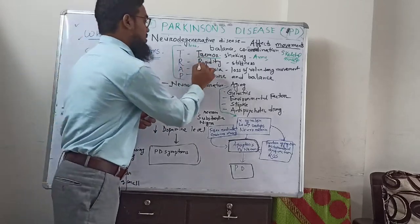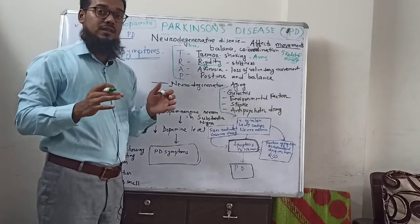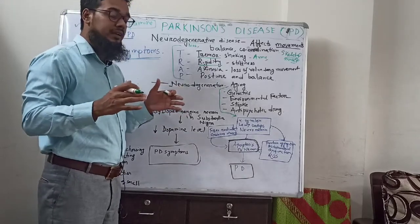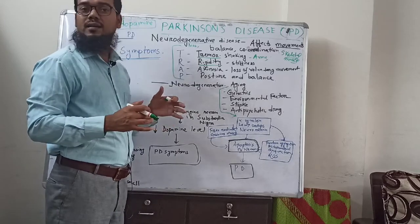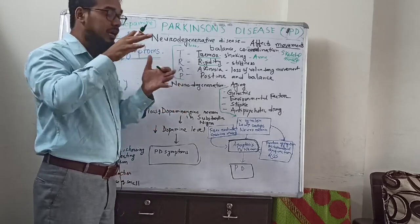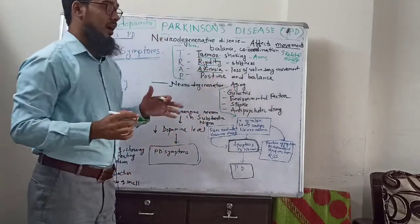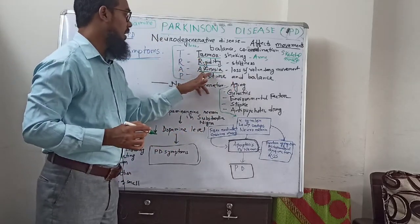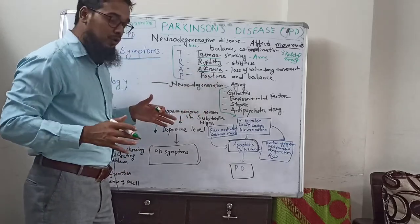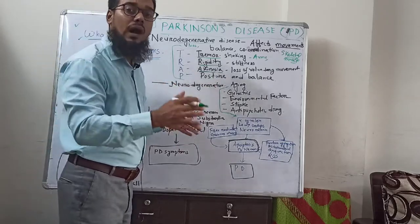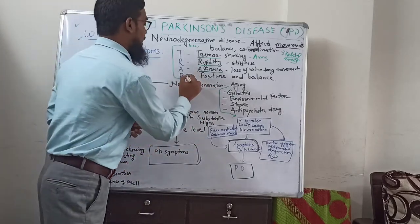R means rigidity — rigidity means stiffness. They will find it difficult to move the body or the neck. They become more stiff. Next is A, which means akinesia — loss of movements. People will find it difficult to walk, run, or move. This is called akinesia.